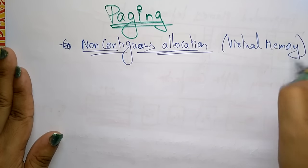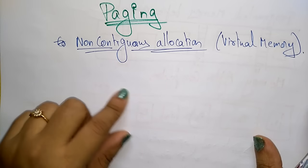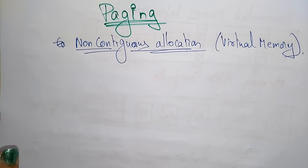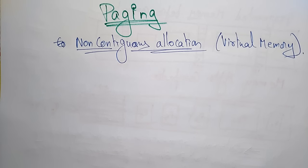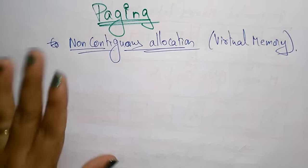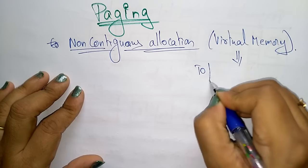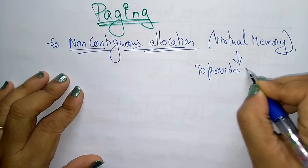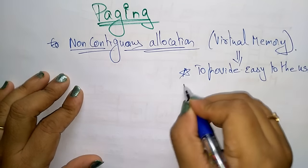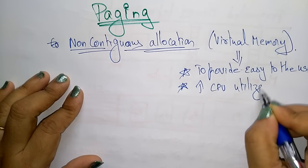Virtual memory means it is not real — everything is logical. It is non-contiguous allocation, which is called virtual memory. To provide ease to the users and at the same time to increase the CPU utilization, we use the concept of virtual memory.